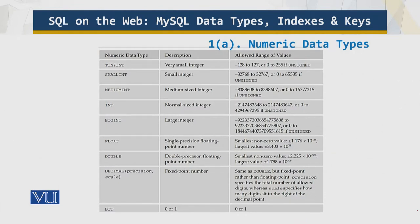In the numeric data types, we have different types: the tiny integer, the small integer, the medium integer, and so on. You can store data in many ways. So why not always use the big int or double? The problem is that the bigger the data type, the more storage space it takes up in the database.